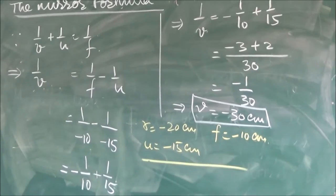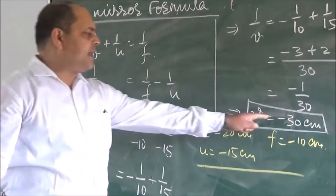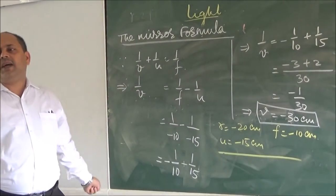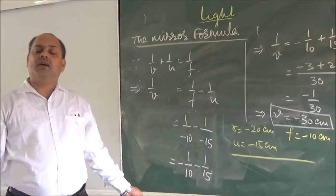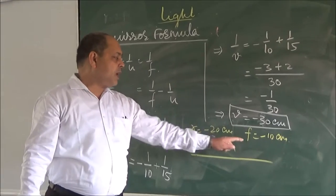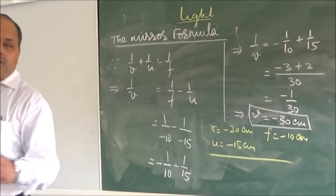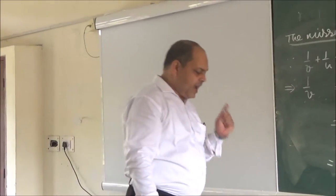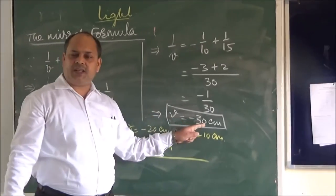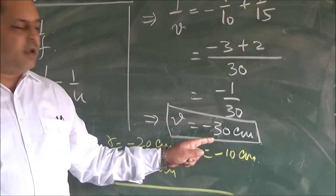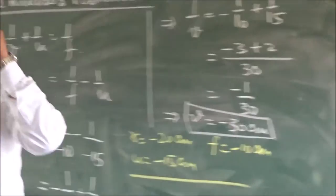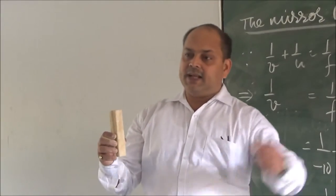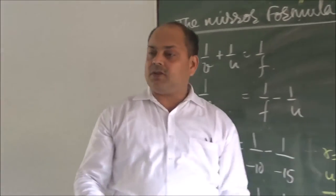We have found the position of the image. This minus sign indicates that the image is in the same direction as the object — in front of the mirror. Now we have to find the size, which requires magnification. We have already found the position V, and the nature: because V is negative, the image is real, since it can be located on the screen on the same side as the object.